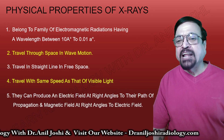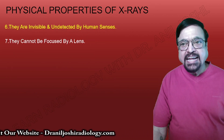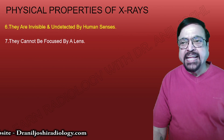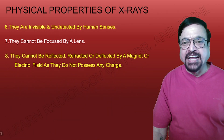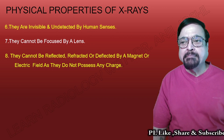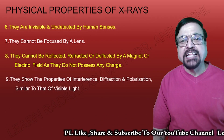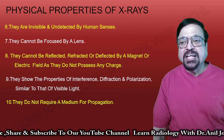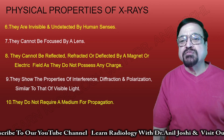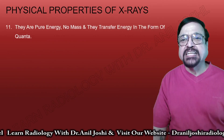X-rays also produce a magnetic field along with the electric field. They are invisible and cannot be detected by human senses. They cannot be focused by a lens like light, and cannot be reflected, refracted, or deflected by a magnet or electric field, as they do not possess any charge. They show properties of interference, diffraction, and polarization similar to visible light, and do not require a medium for propagation.